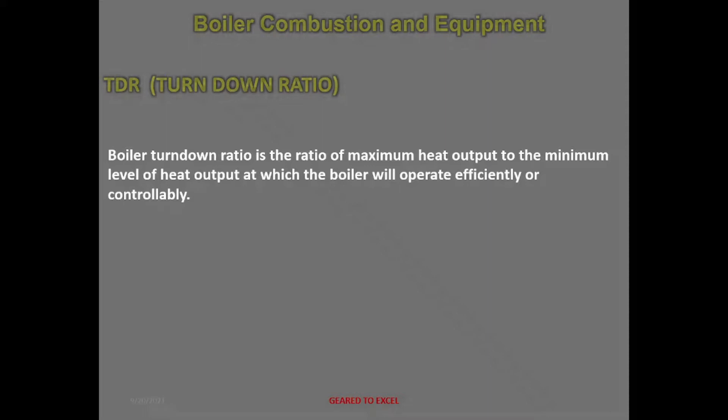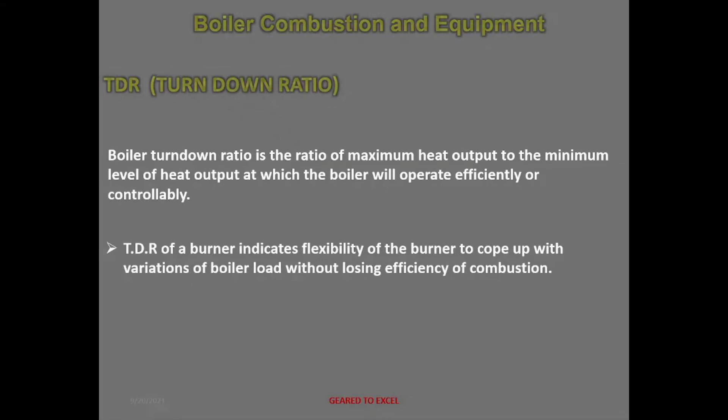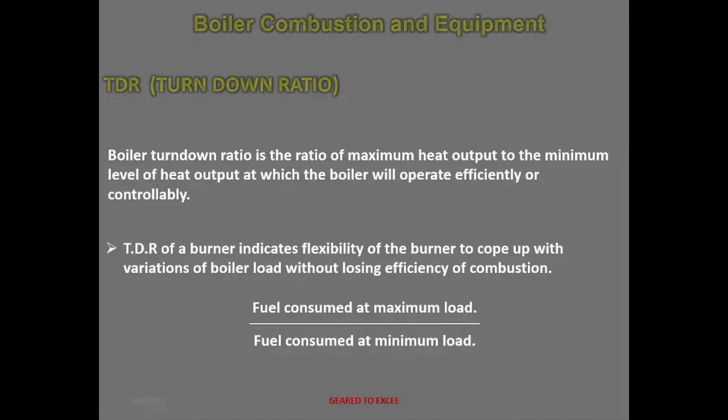TDR — Turndown Ratio. Boiler Turndown Ratio is the ratio of maximum heat output to the minimum level of heat output at which the boiler will operate efficiently or controllably. TDR of a burner indicates flexibility of the burner to cope with variation of boiler loads without losing combustion efficiency. TDR is fuel consumed at maximum load to fuel consumed at minimum load.